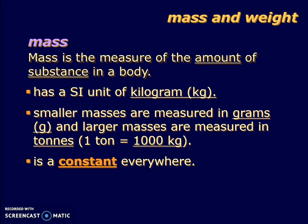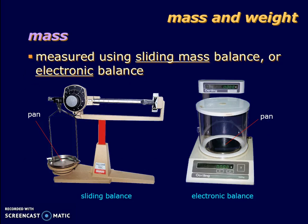One important thing to note: mass is a constant everywhere. Whether you're on earth or on the moon, mass will be the same — it will not change. To measure mass, we use a measuring instrument called the sliding mass balance. You'll probably see something like this in a Chinese traditional medicine hall. But in the science lab, we use a more convenient instrument known as the electronic balance, where the number can be easily read off the scale.